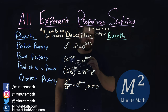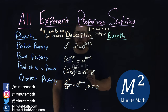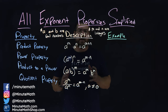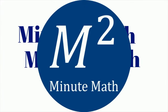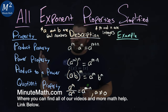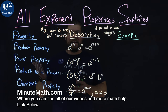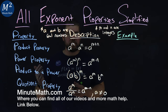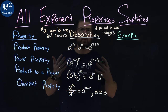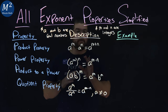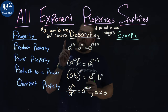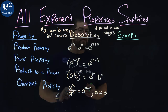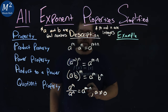Hi, I'm Sean Gannon and this is Minute Math. Today we're learning about exponent properties — we're going to be talking about all of them. We're given four exponent properties here and we'll have four more at the end. All these properties have rules that go with them, and when we use them we can simplify a lot of problems. Note that a and b are real numbers and m and n have to be integers.